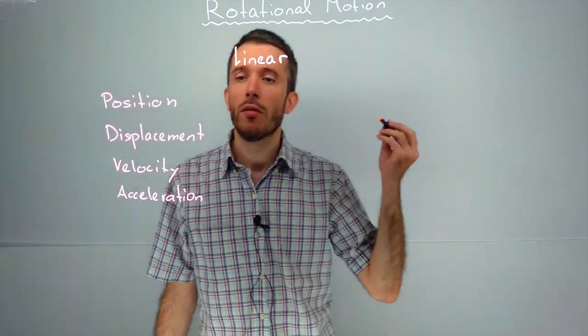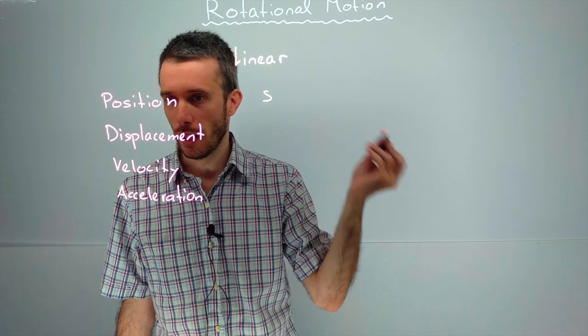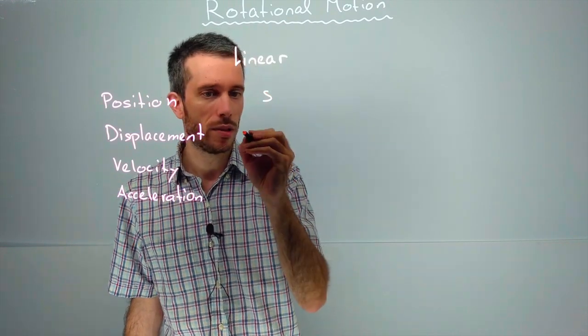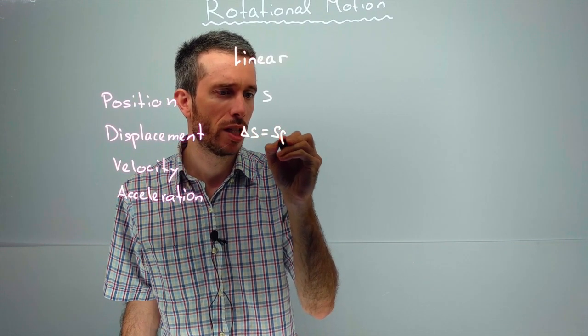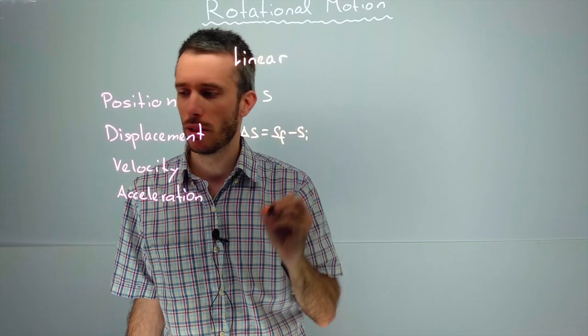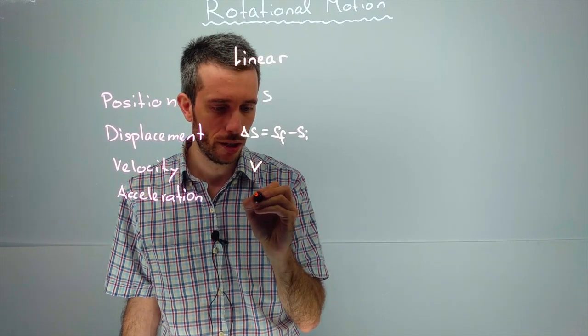And the variables we used were S or X or Y or Z, displacement being the delta S, being the difference between the final and the initial position, velocity V and acceleration A.